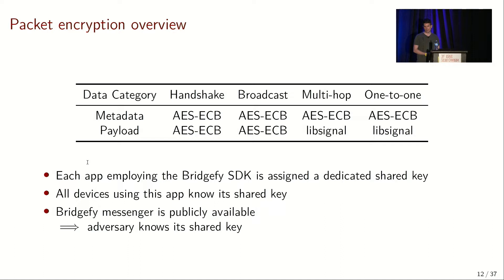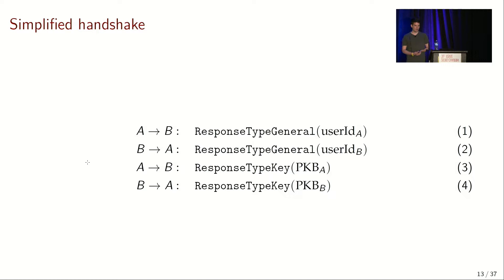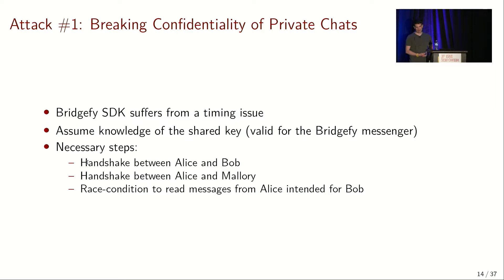For the Signal encryption, the handshake is quite trivial. First, users exchange their user IDs, and then they exchange their pre-key bundles. Obviously, this is susceptible to a man-in-the-middle attack.